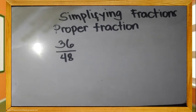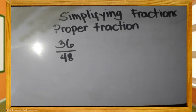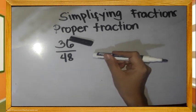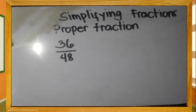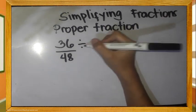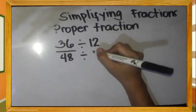Simplifying proper fractions. Paano natin isisimplify ang 36 over 48? Una, mag-isip ng numero na pwedeng mag-divide sa ating numerator at pwedeng i-divide sa ating denominator. Ito ay ang twelve. Si numerator at si denominator ay i-divide natin sa twelve.